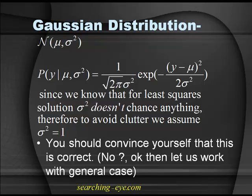Since we know that for the least squares solution sigma squared doesn't change anything — as I already told you in an earlier lecture — when calculating the maximum log likelihood, we had to minimize the summation over all i of (y − h(x_i))² over 2σ². Taking two sigma squared or not doesn't change the final answer, which is (X^T X)^{-1} X^T y. For simplicity we can assume σ² = 1, but I will derive for general σ².